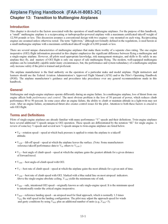There are several unique characteristics of multi-engine airplanes that make them worthy of a separate class rating. The one-engine inoperative (OEI) flight information presented in this chapter emphasizes the significant difference between flying a multi-engine and a single-engine airplane. However, all pilots need appropriate knowledge, risk management strategies, and skills to fly safely in any airplane they fly, and mastery of OEI flight is only one aspect of safe multi-engine flying. The modern, well-equipped multi-engine airplane can be remarkably capable under many circumstances, but the performance and system redundancy only increase safety if the pilot is trained and proficient.